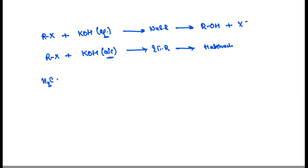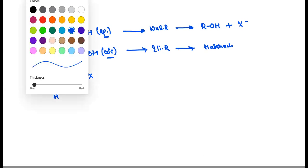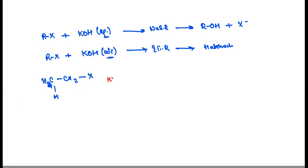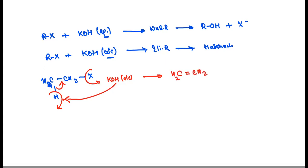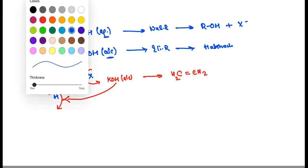Let's say I have CH3–CH2 with an X group. If I take the CH2 and this hydrogen as well, then this becomes CH2=CH2. But if we have done this reaction with aqueous KOH, then our result is different.